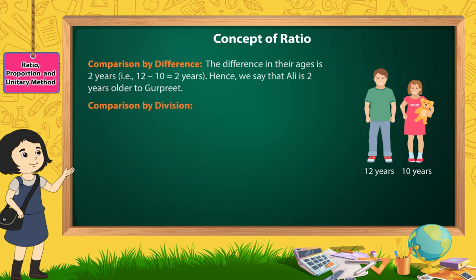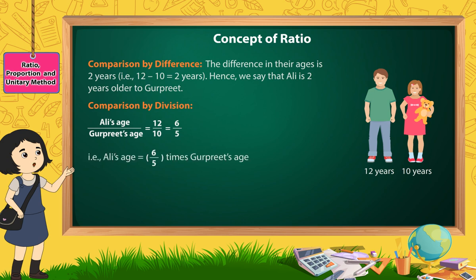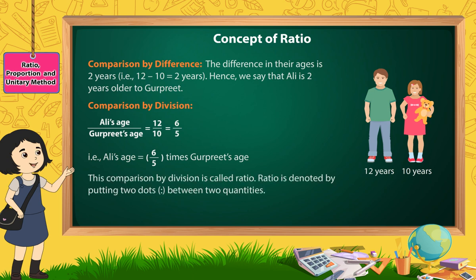Comparison by Division: Here, we divide Ali's age by Gurpreet's age and reduce the fraction to its smallest form. Ali's age divided by Gurpreet's age is equal to 12 by 10, which is equal to 6 by 5. That is, Ali's age is equal to 6/5 times Gurpreet's age. This comparison by division is called Ratio. Ratio is denoted by putting two dots between two quantities.